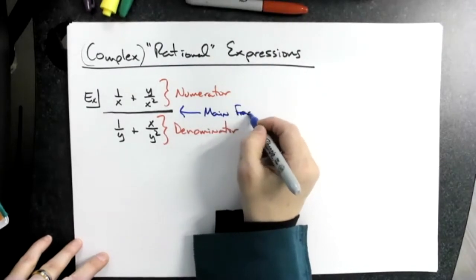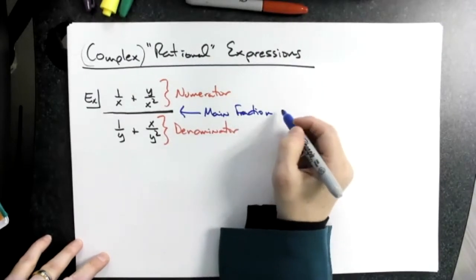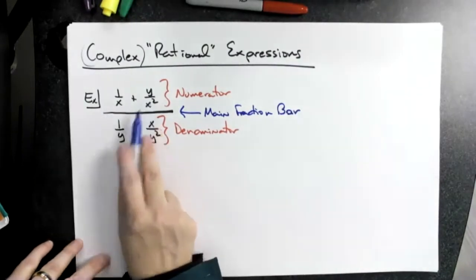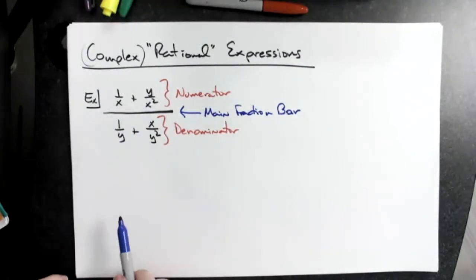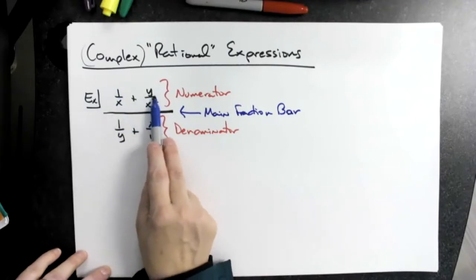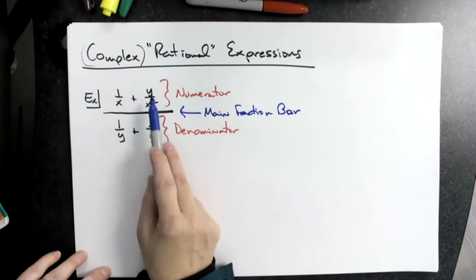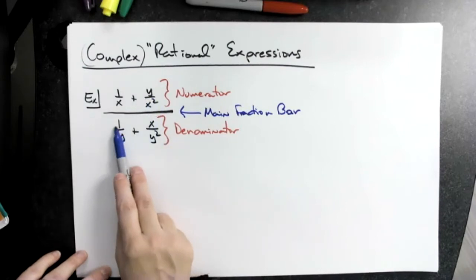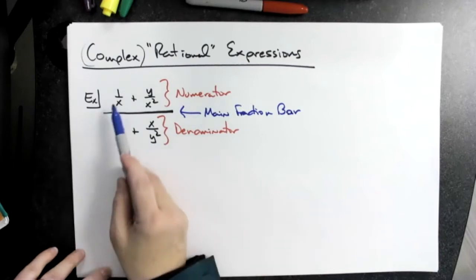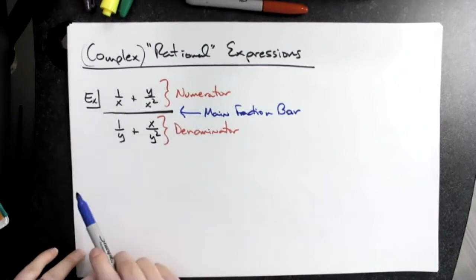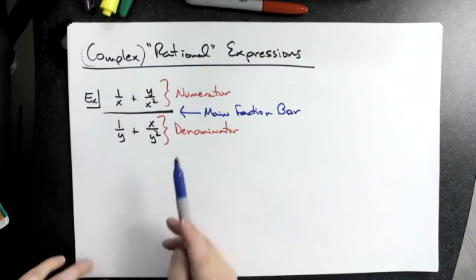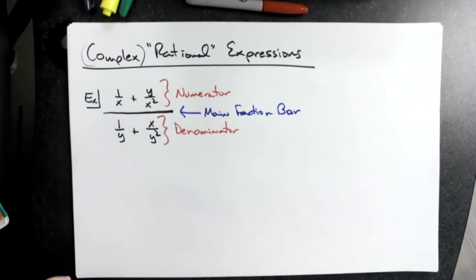I put actually a lot of fractions in that example — a fraction in each location. But I don't have to do that. There could be a fraction in the numerator but not in the denominator, maybe just an x squared. Even with no fractions in the denominator, it's still a complex rational expression because I've got a fraction in the numerator. I just have to have a fraction somewhere, either in the top or in the bottom.